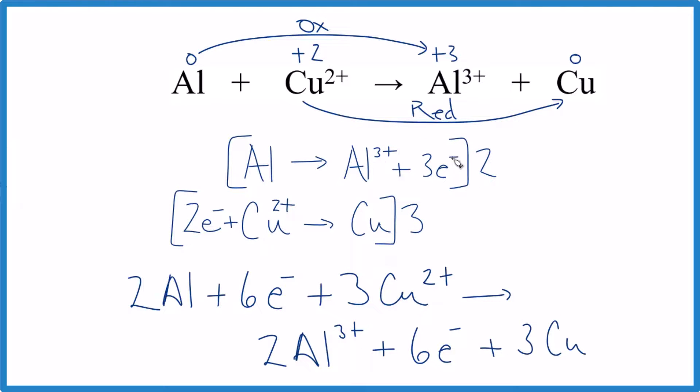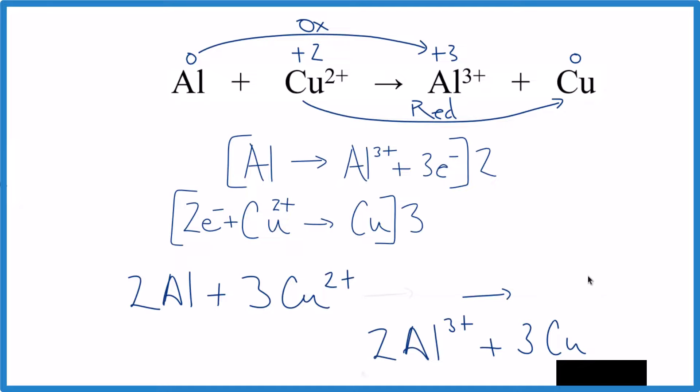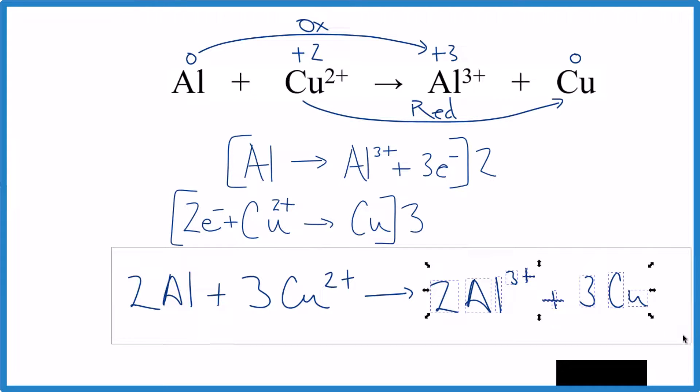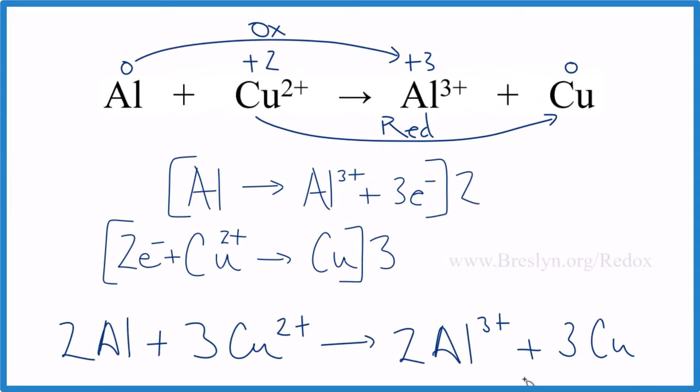So two aluminum ions, two times three electrons, that's the six electrons, and then three times the copper. This is the balanced redox reaction. We're going to cross out these electrons here since they're on both sides. Clean that up. And that's the final balanced redox reaction.